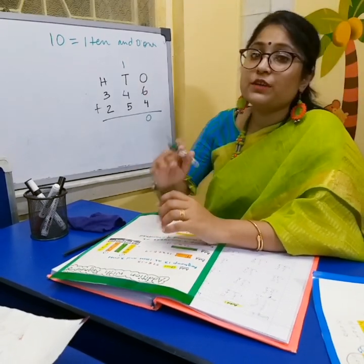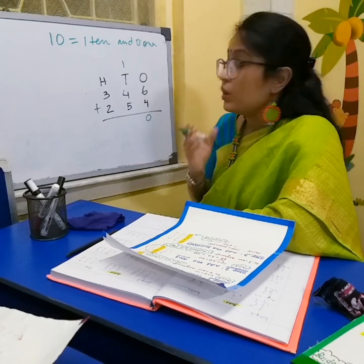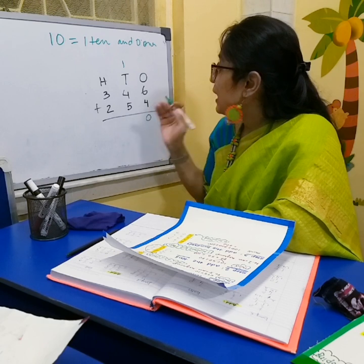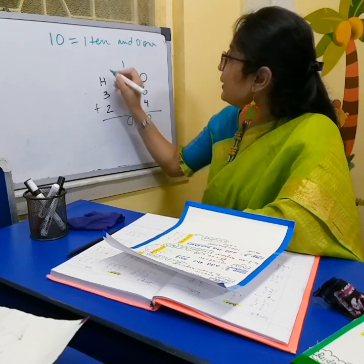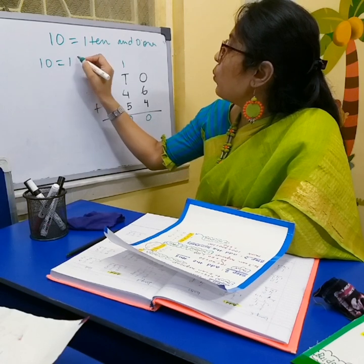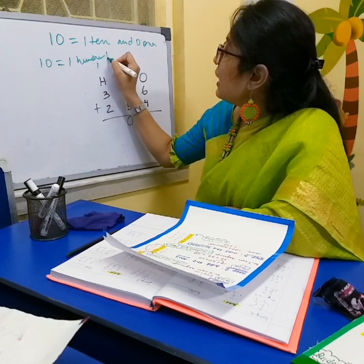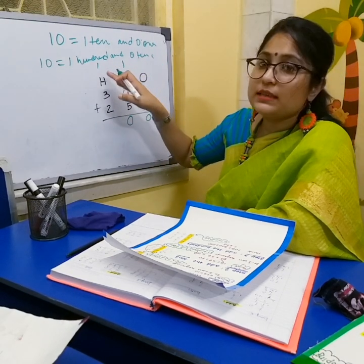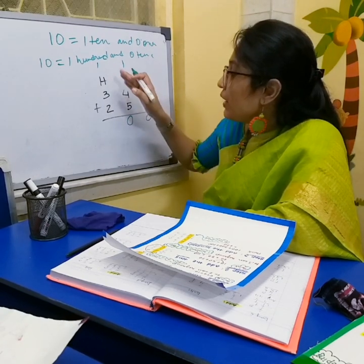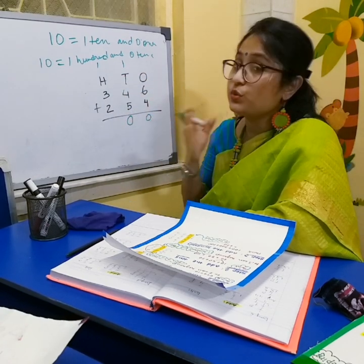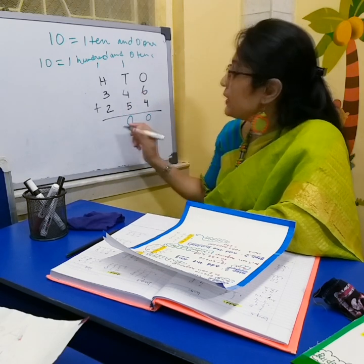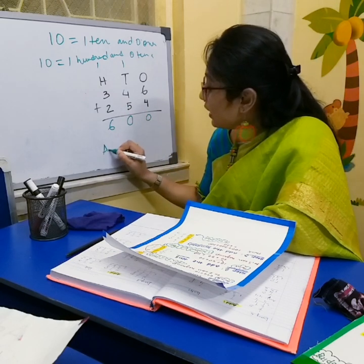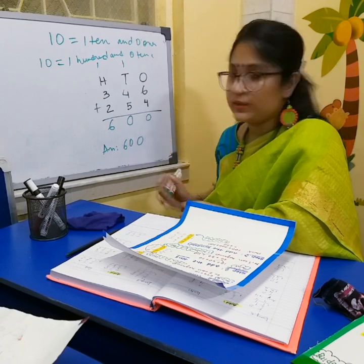Now we shift to the tens column: 4 plus 5 equals 9, and 9 plus 1 carried equals 10. So again we regroup as 1 hundred and 0 tens, placing 1 on top of the hundreds column. Now we add the hundreds column: 3 plus 2 is 5, and 5 plus 1 carried is 6. So the total is 600.